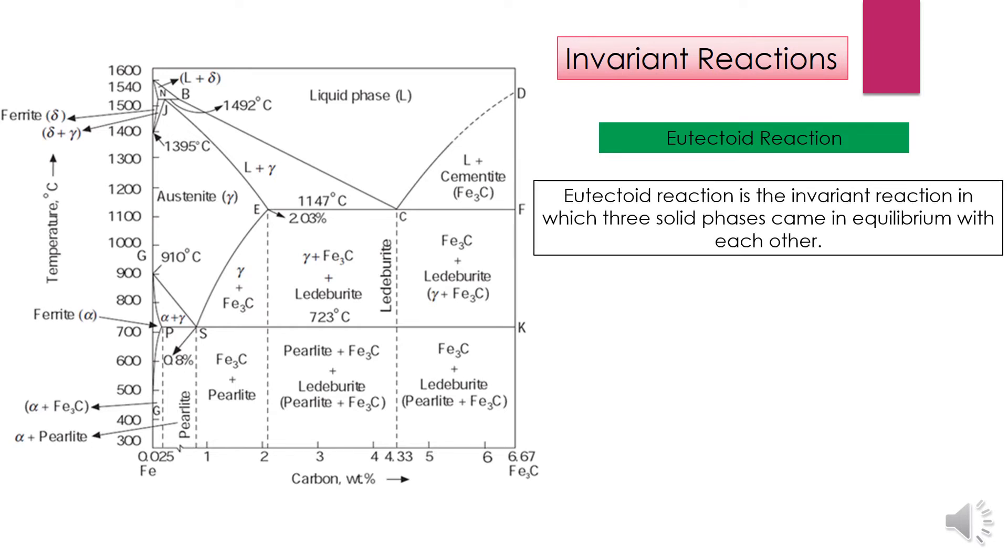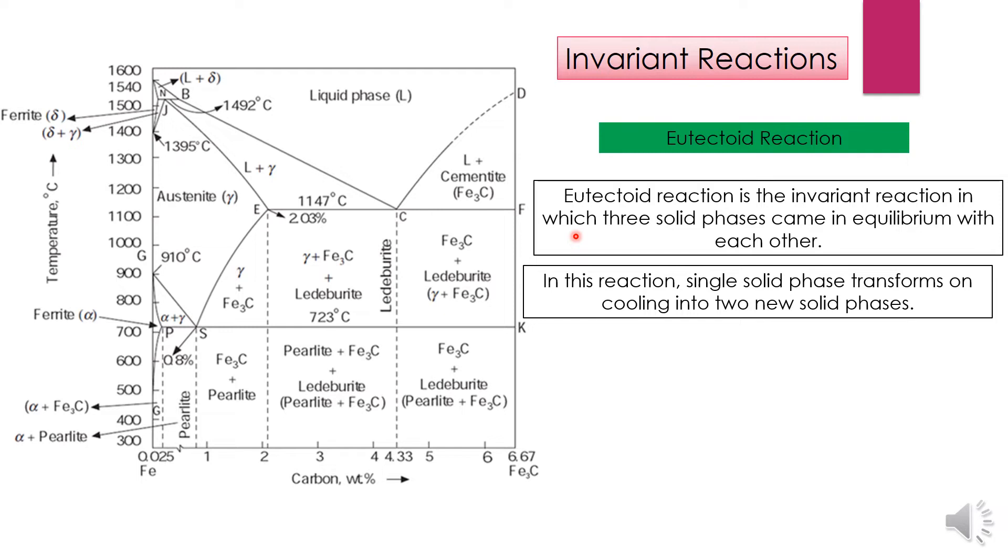Eutectoid reaction is the invariant reaction in which three solid phases come in equilibrium with each other. In this reaction, single solid phase transforms on cooling into two new solid phases.